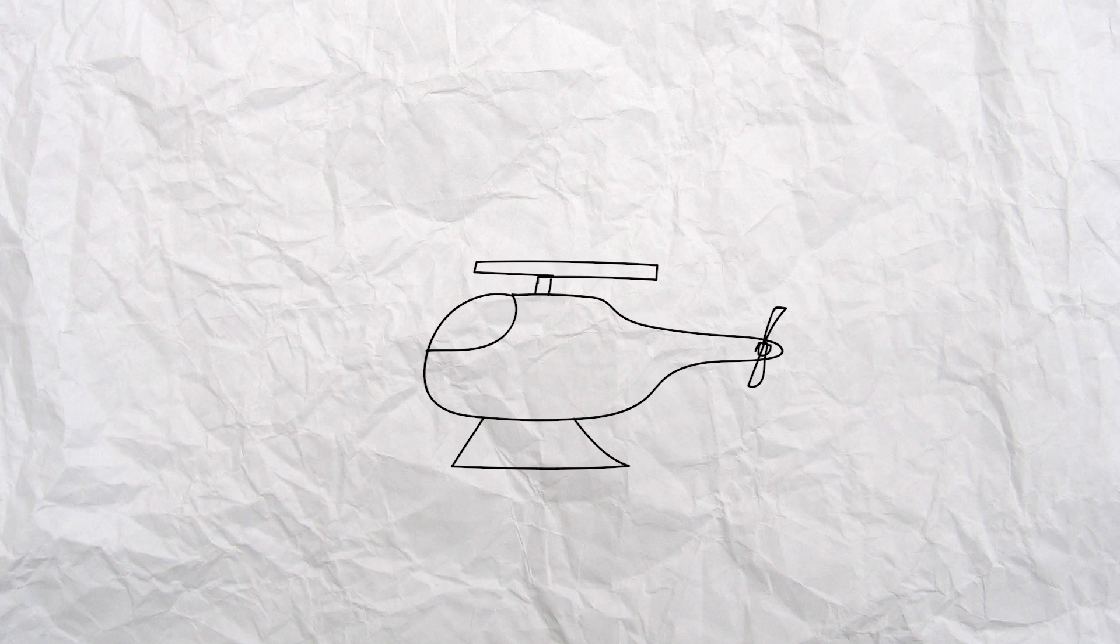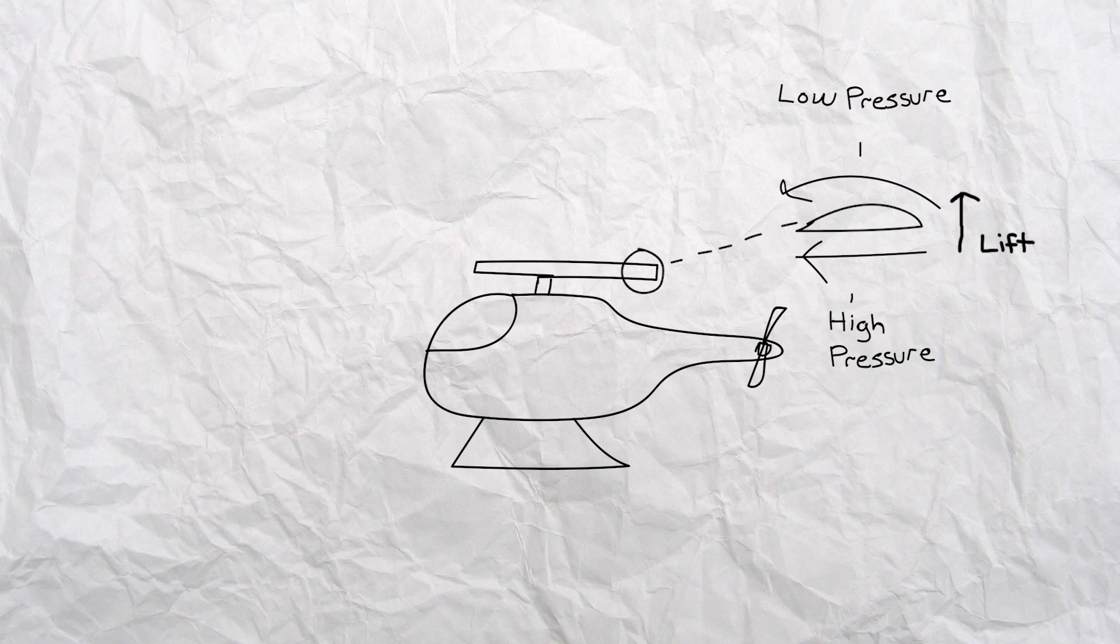In a very simplified rundown, the rotary wing of the helicopter is shaped and functions like that of an airplane wing. As the helicopter's engine moves the rotary wing through the air, it creates lift.